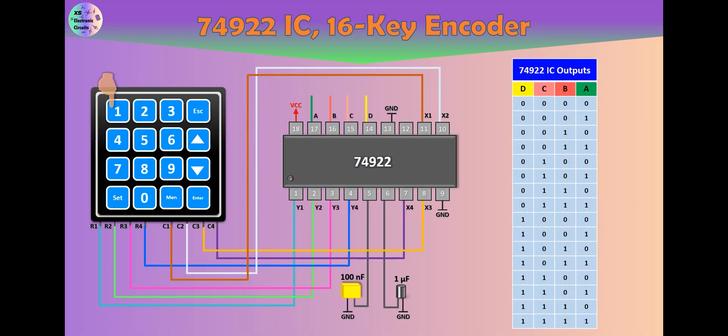When the first key is pressed, the binary number 0 is produced at the output. When the fifth key is pressed, the binary number 4 is produced at the output.